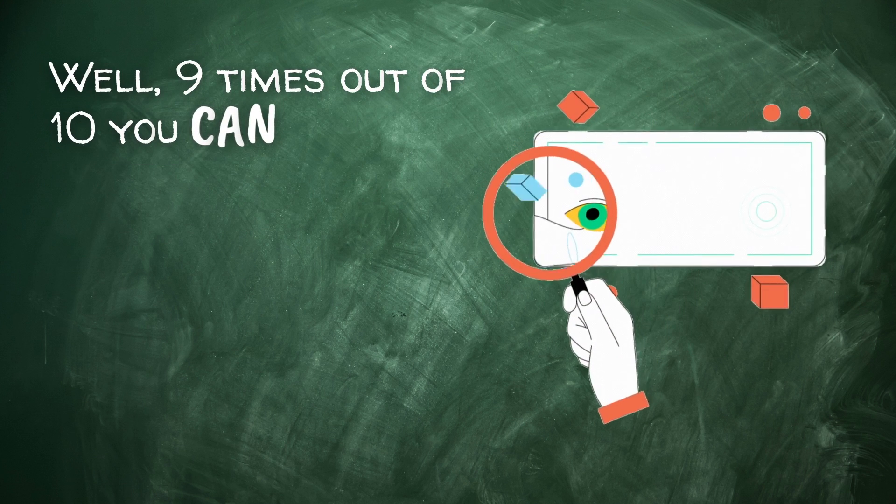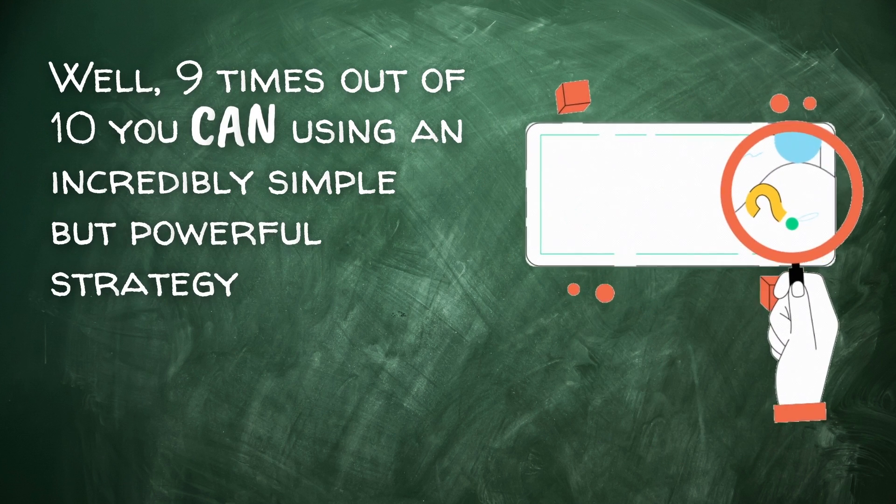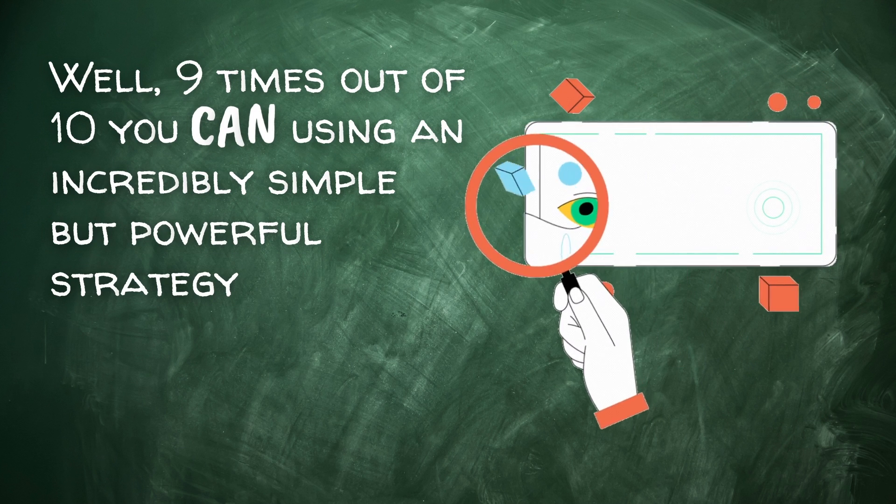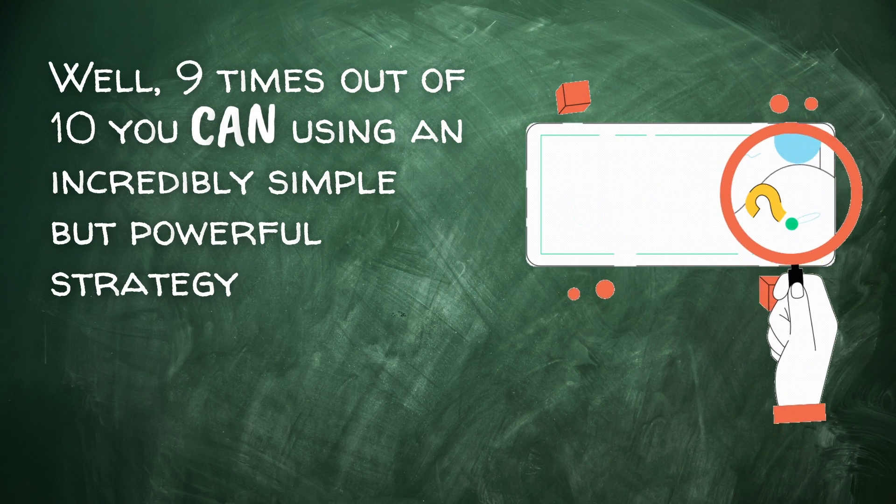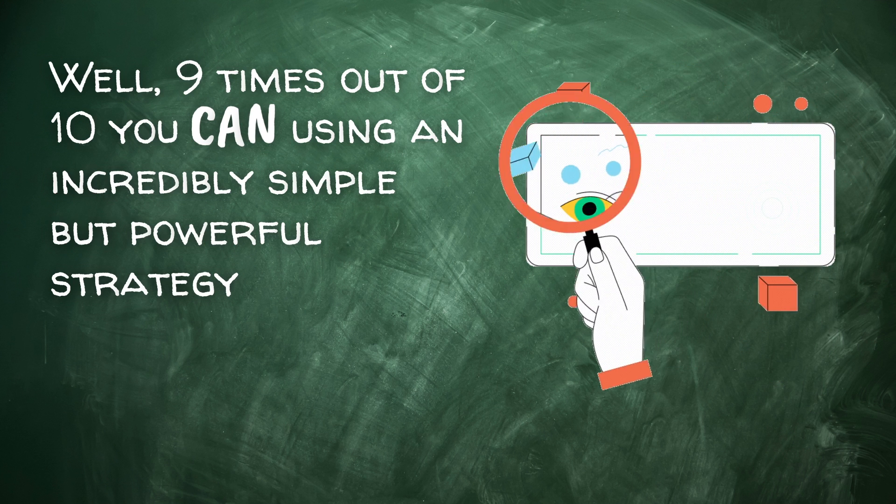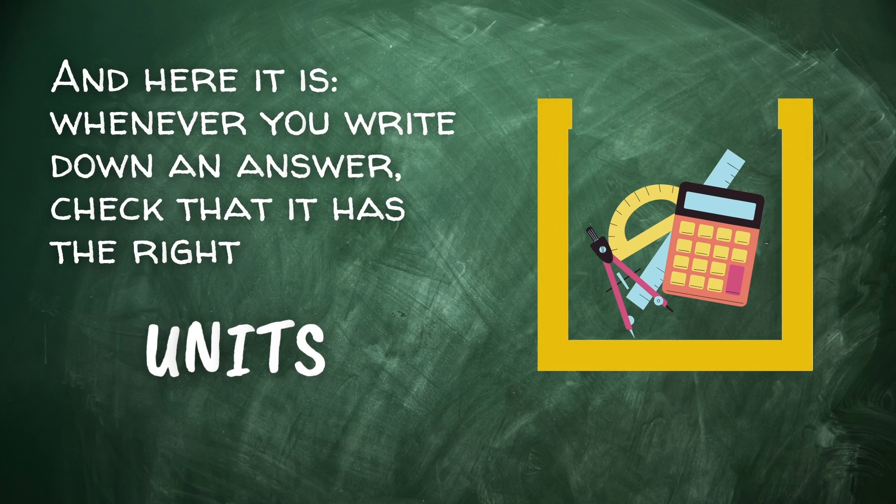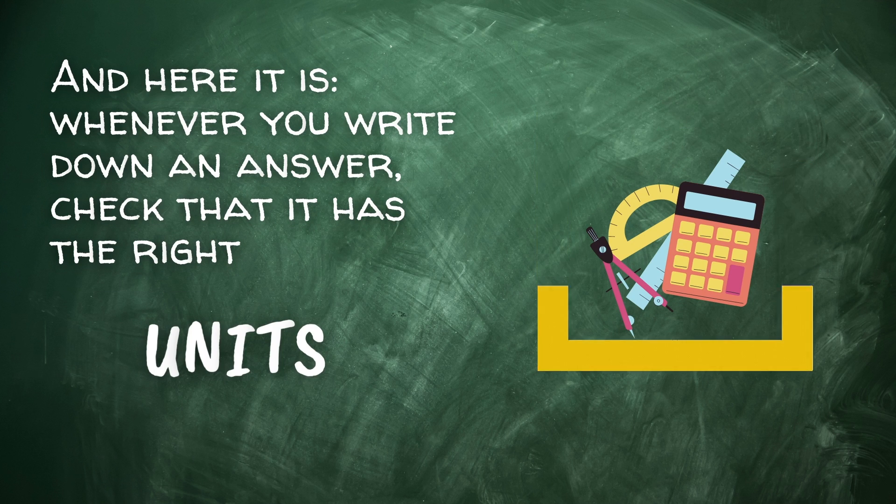Well, nine times out of ten, you can catch your own mistakes using an incredibly simple but powerful strategy that beginning students don't always appreciate. I certainly wish I'd made better use of this strategy when I was a beginner. And here it is. Whenever you write down an answer, before you put a box around it, you check that it has the right units. It's really that simple.